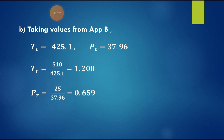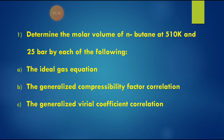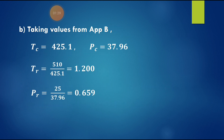Next, we use the generalized compressibility factor correlation. From Appendix B of the Smith and Van Ness textbook, we take the critical properties for n-butane: Tc = 425.1 K and Pc = 37.96 bar. We then calculate Tr = T/Tc = 510/425.1 = 1.200, and Pr = P/Pc = 25/37.96 = 0.659.